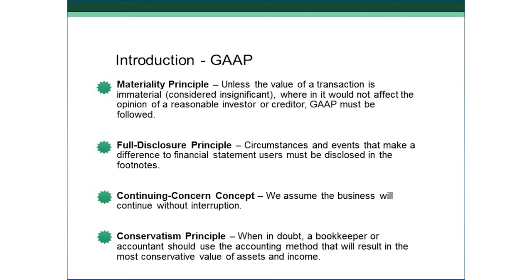The Continuing Concern Concept means that we assume our business is going to go on forever without interruption. The reason is that if we didn't assume that, we'd have different accounting practices. For example, if I knew I was closing my doors next month, a car I own wouldn't be worth cost anymore — it would be worth whatever I could sell it for on the open market, which is market value. So our assumption is always that assets stay at cost and the business continues on indefinitely.